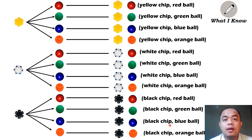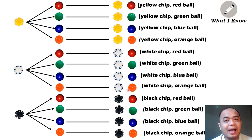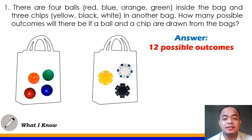How many possible outcomes do we have here? Let's count: 1, 2, 3, 4, 5, 6, 7, 8, 9, 10, 11, 12. So we have 12 possible outcomes ang pwede natin makuha per pick natin sa ating mga bag. The final answer for item number 1 is 12 possible outcomes.